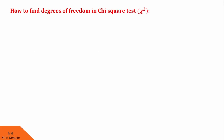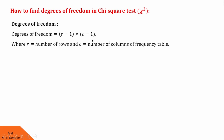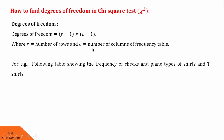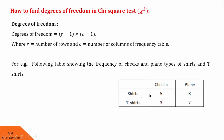Next, we will see how to find degrees of freedom in chi-square test. Degrees of freedom in chi-square test is given by the formula (R minus 1) into (C minus 1), where R denotes the number of rows and C denotes the number of columns of the frequency table. To understand this, let us consider an example. The following table shows the frequency of check and plain types of shirts and t-shirts. In this table, there are two rows and two columns. Therefore, degrees of freedom is 2 minus 1 into 2 minus 1, that is 1.